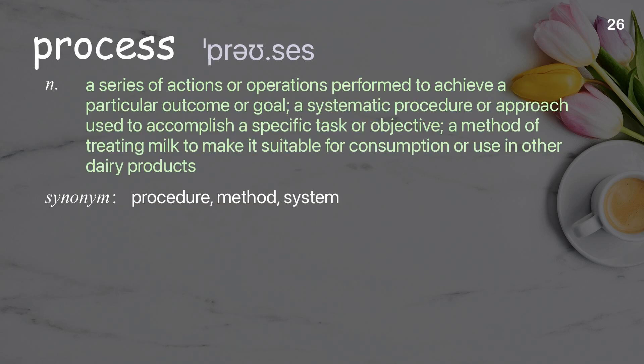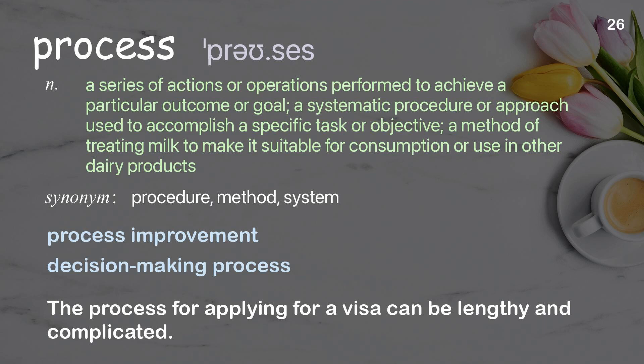Process: A series of actions or operations performed to achieve a particular outcome or goal; a systematic procedure or approach used to accomplish a specific task or objective. Examples: Process improvement. Decision-making process. The process for applying for a visa can be lengthy and complicated.